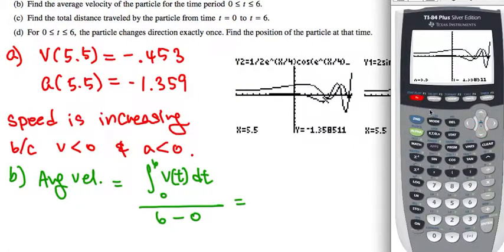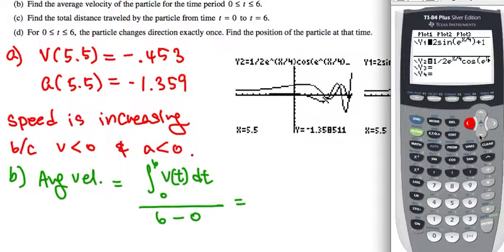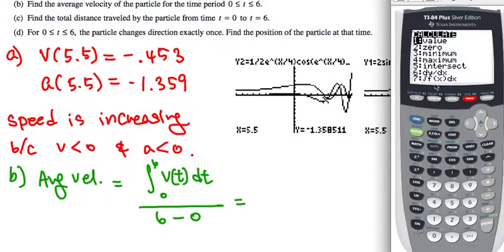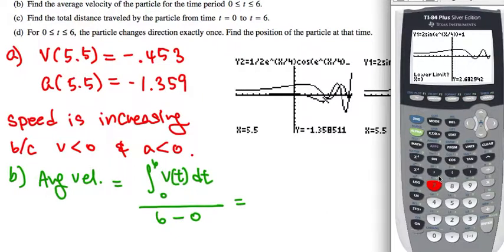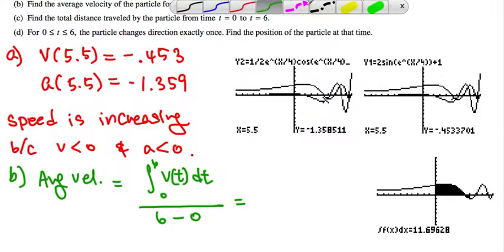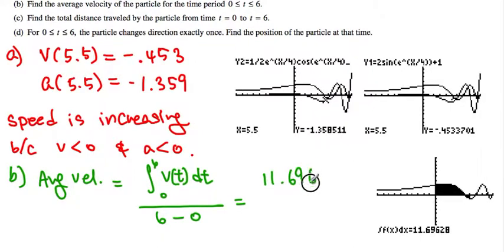Once again, using the calculator. In this case, I am only looking for velocity. So, I am just going to turn off the acceleration for a second. And, I am going to graph it once again. Now, second trace will give us these menus. Number 7. Lower limit was equal to 0 and upper limit was 6. Alright, as you can see, the numerator here was equal to 11.696 divided by 6. That becomes our expression.